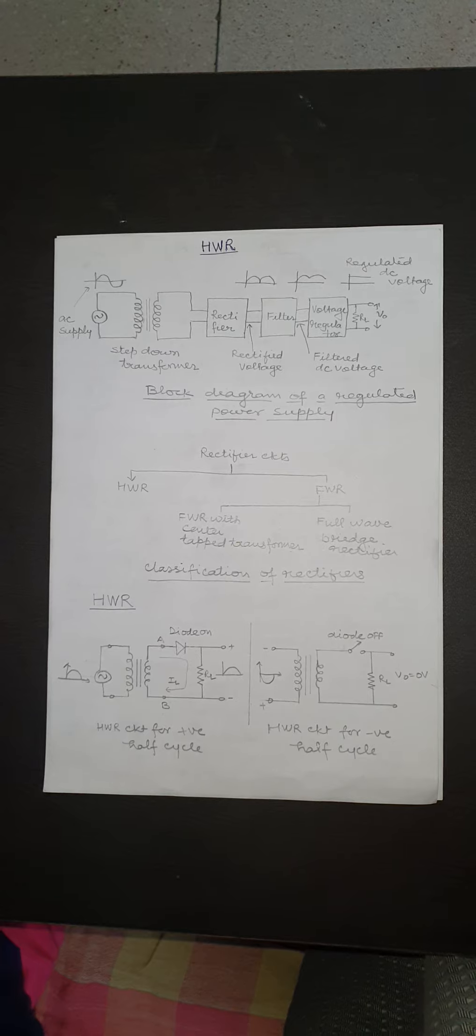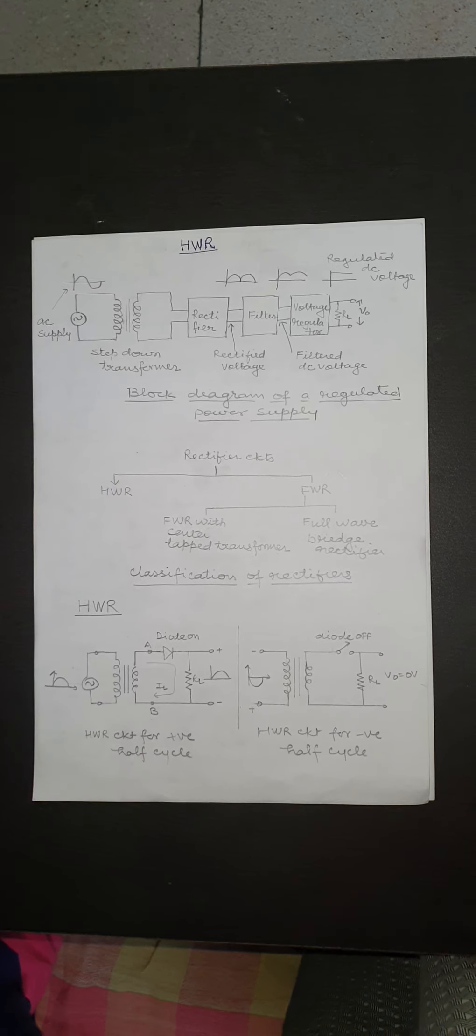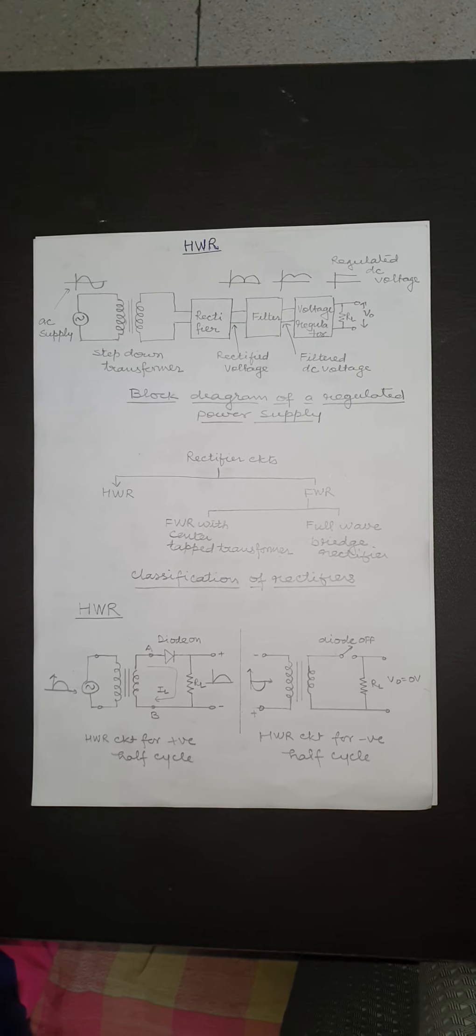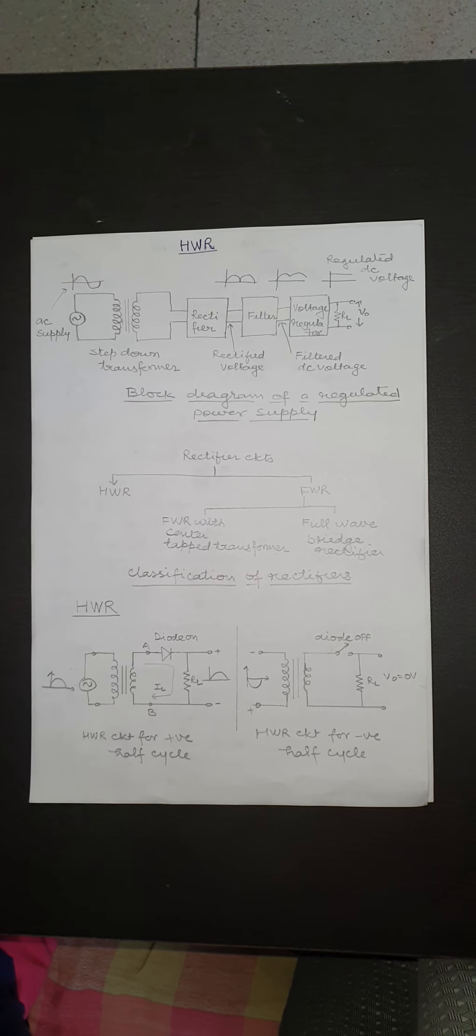Half-wave rectifier and full-wave rectifier. The pulsating DC at the rectifier output is converted into a ripple-free steady DC voltage by the filter circuit.